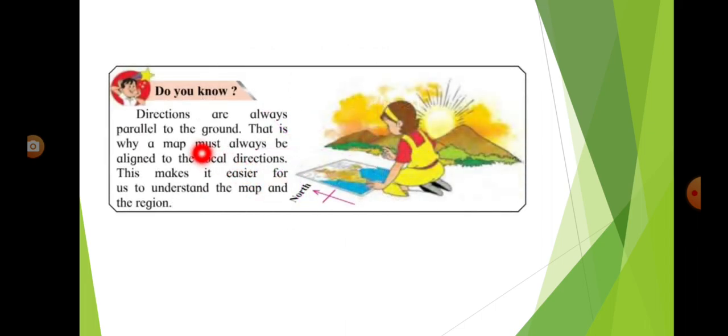Do you know, directions are always parallel to the ground. That is why a map must always be aligned to the local directions. This makes it easier for us to understand the map and the region.